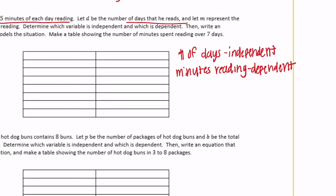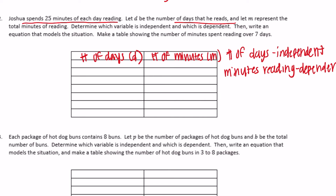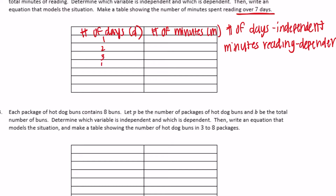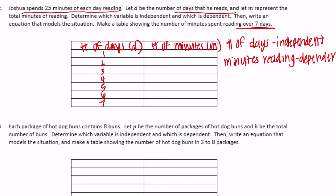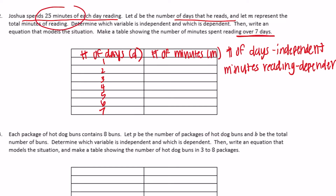We're going to have number of days (d) and number of minutes (m). Make a table showing the number of minutes spent reading over seven days. So: one day, two days, three days, four days, five days, six days, seven days. If he reads for one day, he reads twenty-five minutes. So one day times twenty-five gives us twenty-five minutes. Two days times twenty-five gives us fifty minutes. Three days times twenty-five is seventy-five minutes.